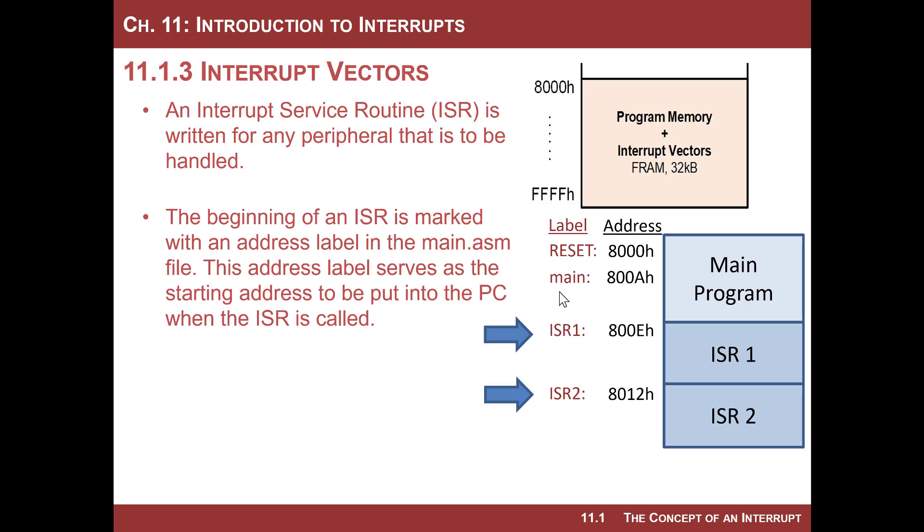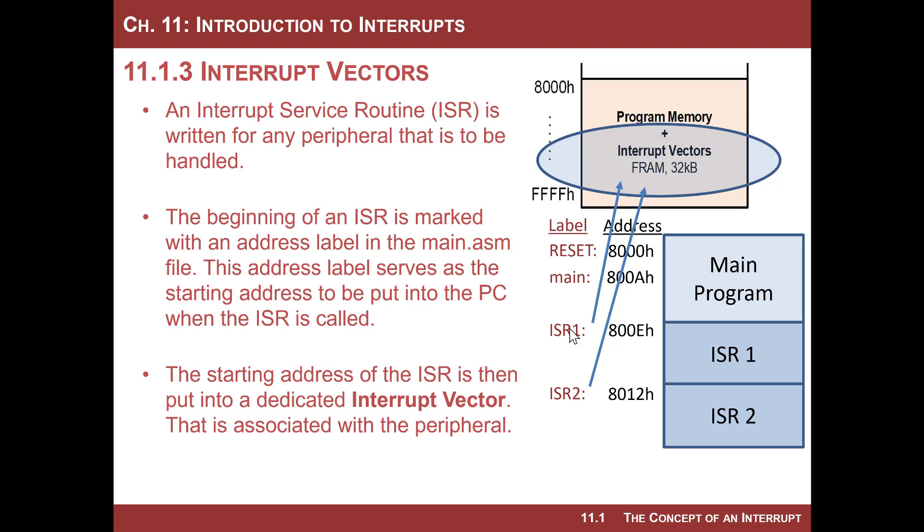What's different about the interrupt service routine address label is that you don't jump to it from your main program. Because your main program doesn't even know when this interrupt service routine will be called, because it's going to be triggered by an external peripheral or some other thing outside of the CPU. So in order to automatically store the starting address, we use this concept of an interrupt vector.